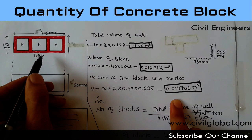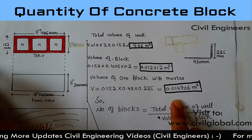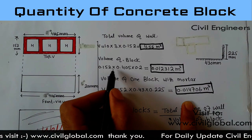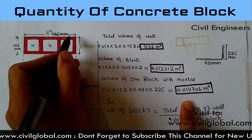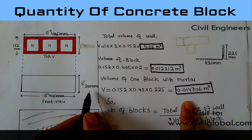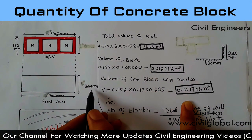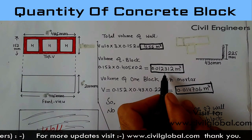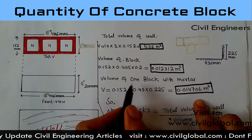Now I will find out the volume for one block. Width is 0.152 meter (152 mm ÷ 1000), multiplied by 0.405 meter (405 mm), multiplied by 0.2 meter (200 mm ÷ 1000). Volume of the block equals 0.012312 cubic meters.